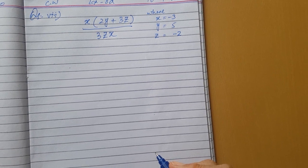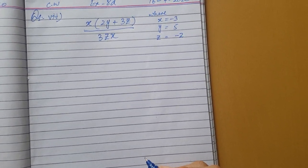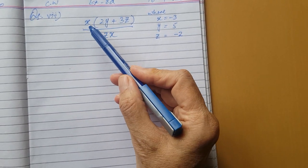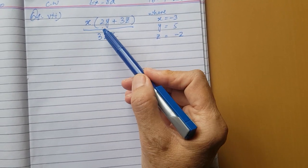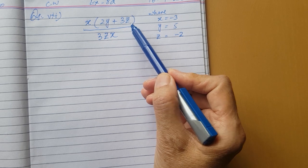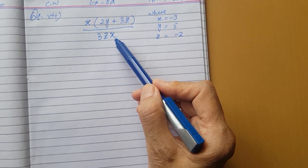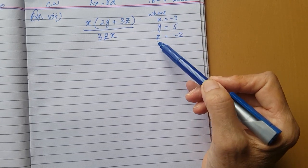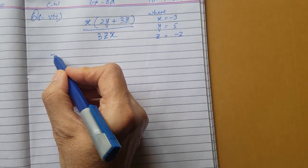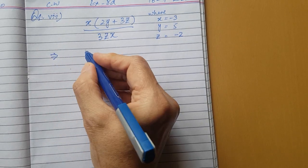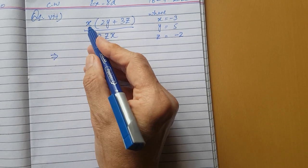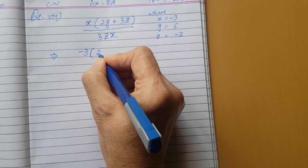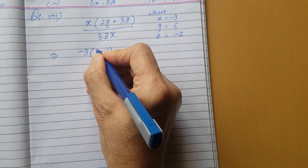The next part is number 7 of question one, exercise 8D. The expression given is x(2y + 3z) divided by 3zx, where x equals -3, y equals 5, and z equals -2. We will put all the given values in place of these variables.